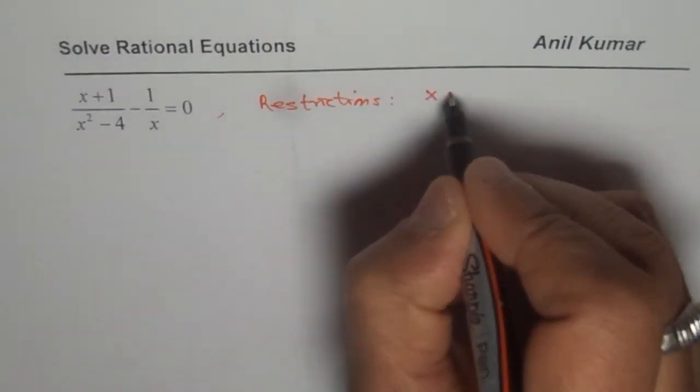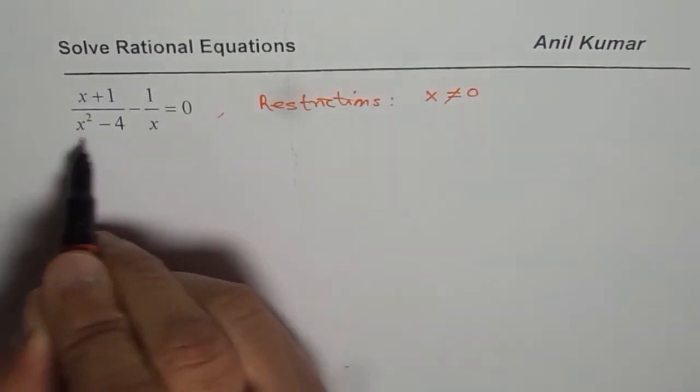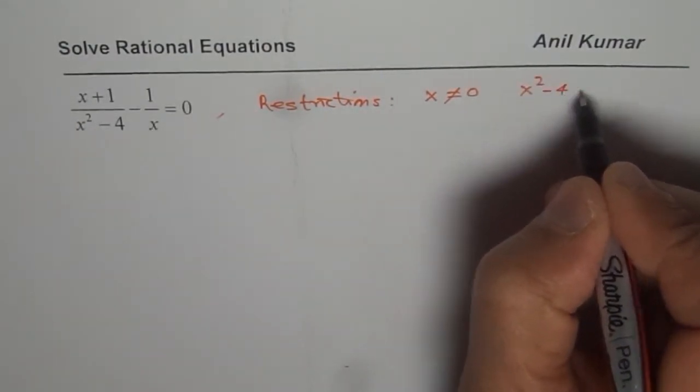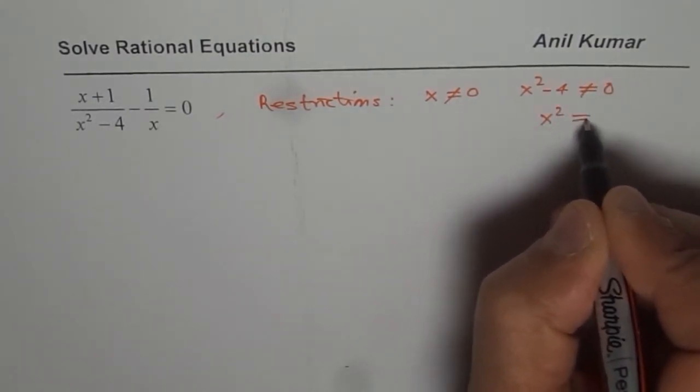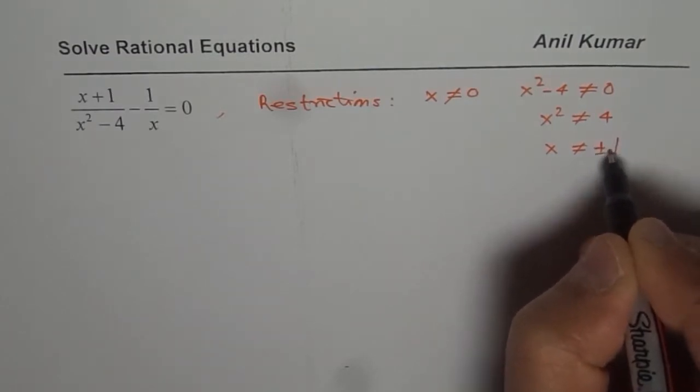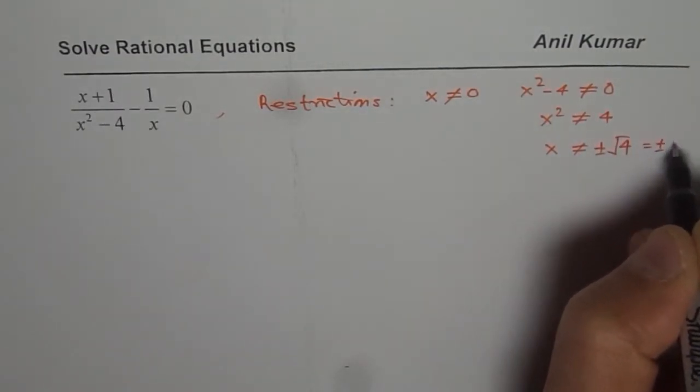So x is not equal to 0, that is one part. The second part is x squared minus 4 is not 0. So when you say x squared minus 4 is not equal to 0, we say x squared is not equal to 4 or x is not equal to plus minus square root of 4, which is plus minus 2.